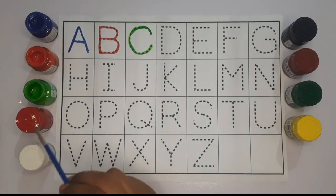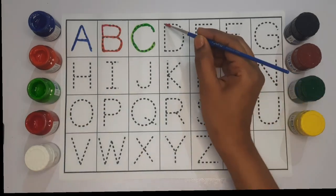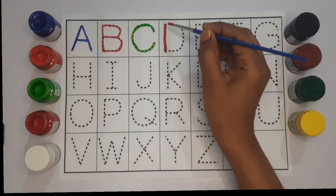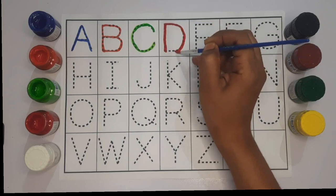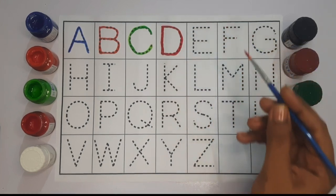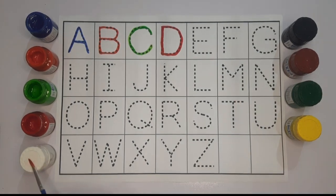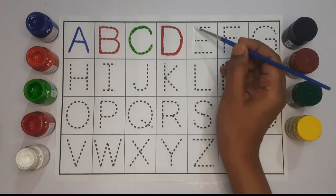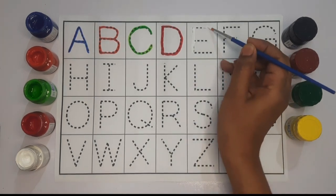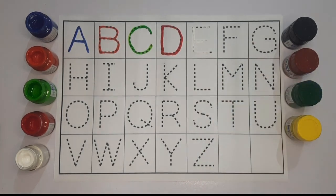Now we will use red color to write D. This is D. Now we will use white color to write E. This is E.